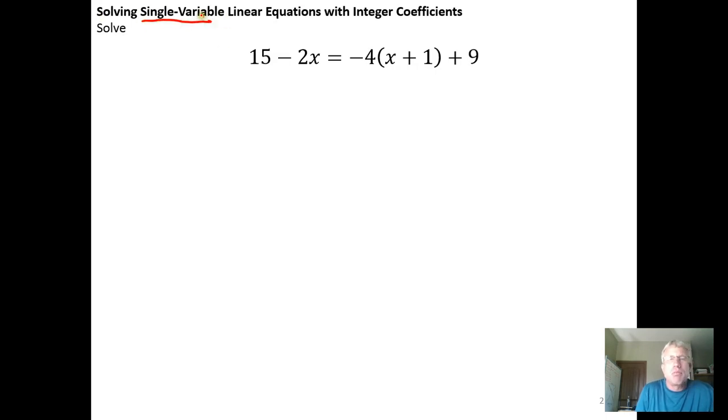Single variable means that there's only one letter representing an unknown in the equation. So this time there is an x. Even though the x occurs more than once, it's a single letter from the alphabet. So it's a single variable equation, even though there's multiple occurrences of that variable.